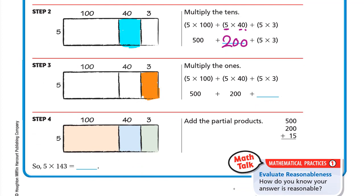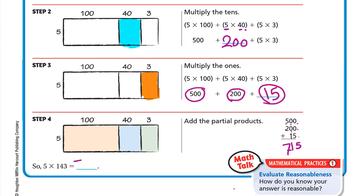5 times 3 is 15. The last step is to add 500 plus 200 plus 15. So 0 plus 0 plus 5 is 5, 0 plus 0 plus 1 is 1, and 5 plus 2 is 7. The answer is 715.